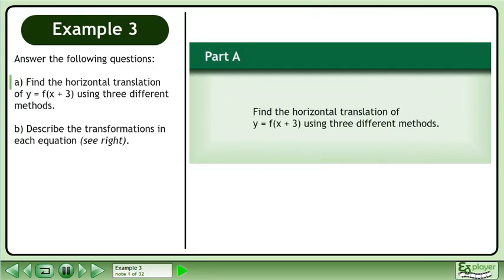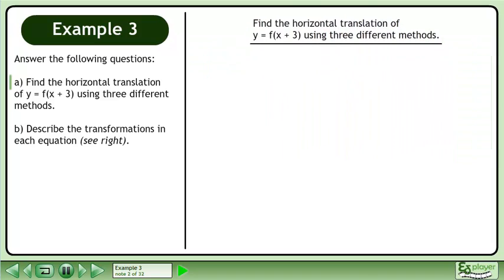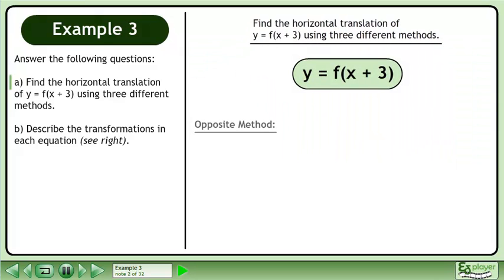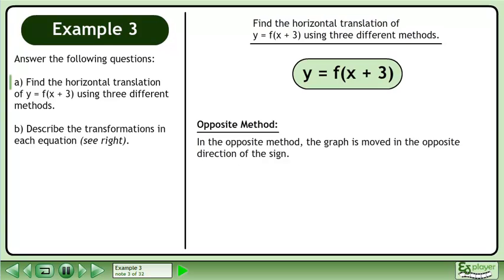Find the horizontal translation of y equals f(x plus 3) using three different methods. The first method is called the opposite method. In the opposite method, the graph is moved in the opposite direction of the sign. We see positive 3, so do the opposite and move the graph three units left.